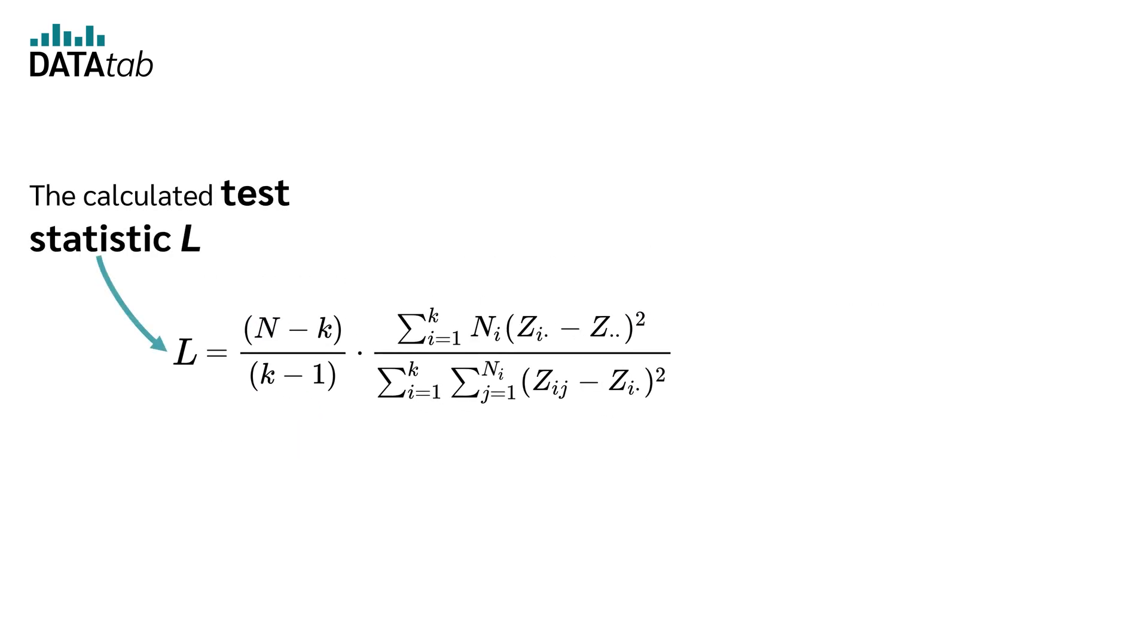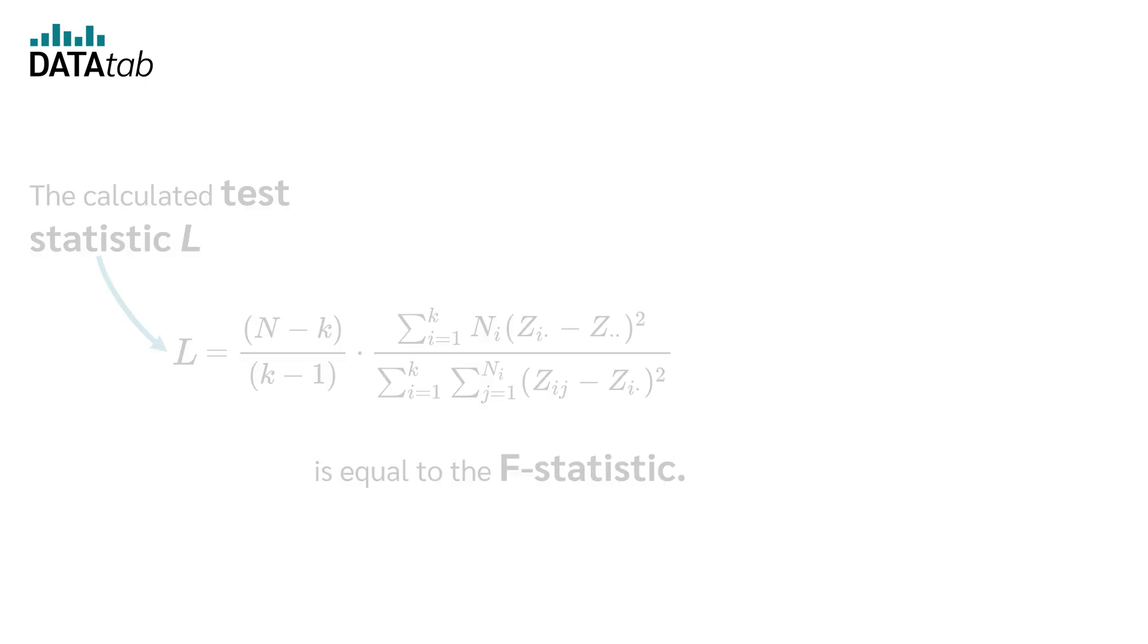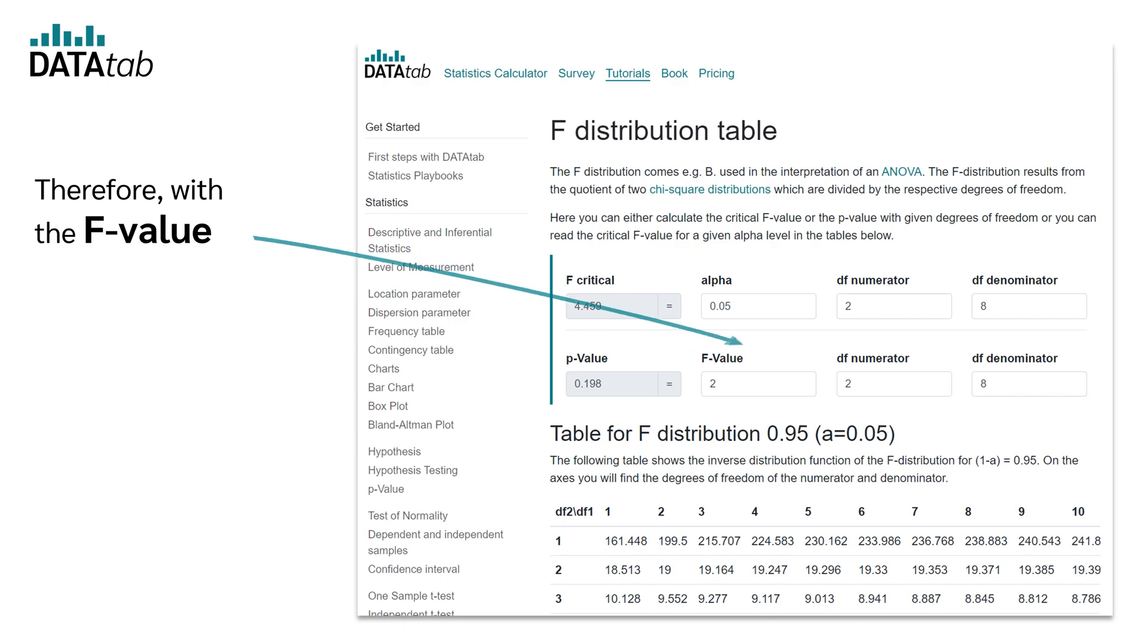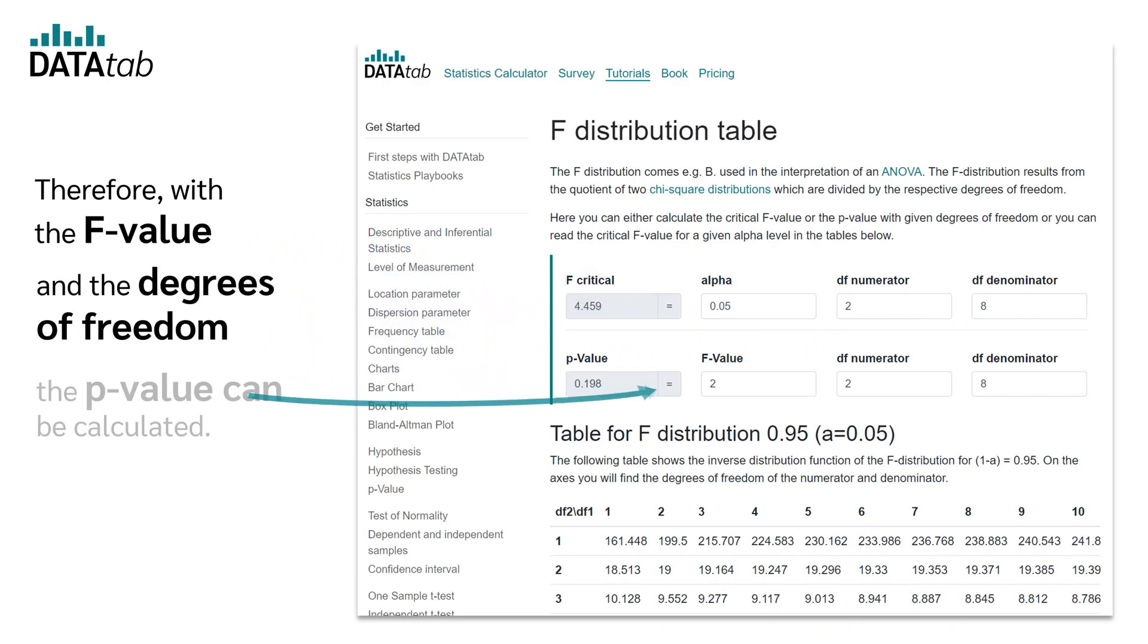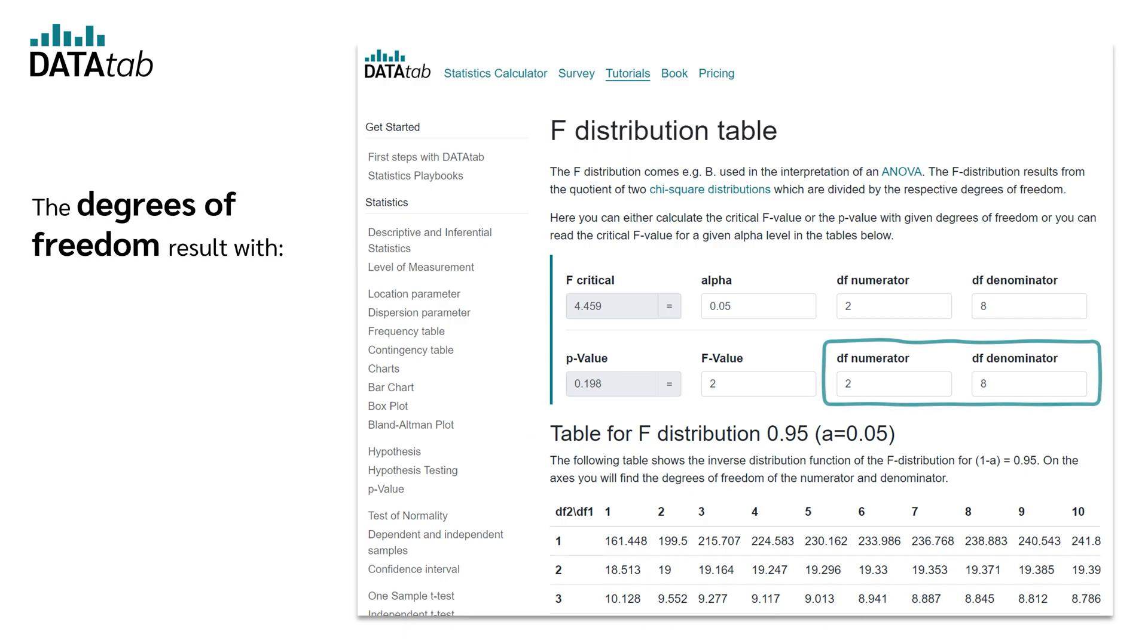The calculated test statistic L is equal to the F statistic. Therefore, with the F-value and the degrees of freedom, the p-value can be calculated. The degrees of freedom result with number of groups minus 1 and number of cases minus number of groups.